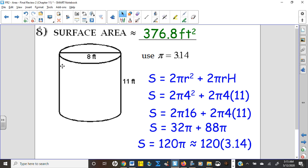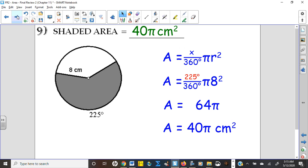Number nine, another sector problem. This time we're using 225, and 225 over 360 reduces to five eighths, and then 64 over 8 is 8 times 5 is 40, so 40π square centimeters.